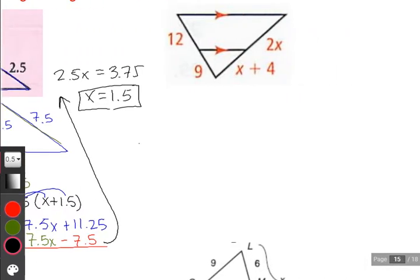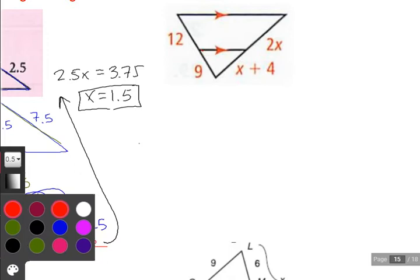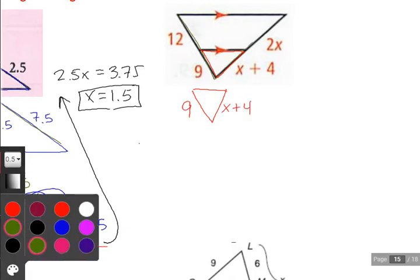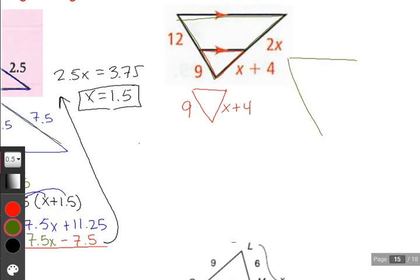They're going to flip it over and try to trick us? They're not going to trick us. Small triangle, 9 on the left, x plus 4 on the right. Large triangle, we have 12 plus 9, so 21 on the left. Here we're going to add the two pieces together. So 2x plus x gives us 3x, and then we're just going to have it trailing plus 4.